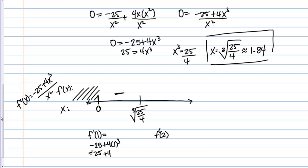So I plug in 2 to my derivative. I get -25 + 4 times 2³. So -25 + 4 times 8. So that's -25 + 32, so that's positive.